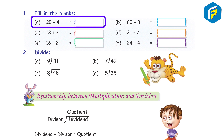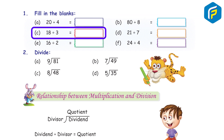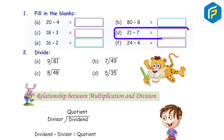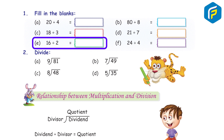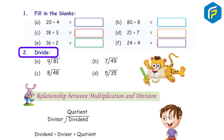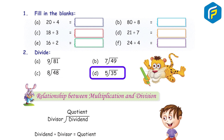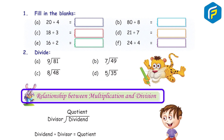Exercise 7.1, Question 1: Fill in the blanks. a) 20 ÷ 4 = 5. b) 80 ÷ 8 = 10. c) 18 ÷ 3 = 6. d) 21 ÷ 7 = 3. e) 16 ÷ 2 = 8. f) 24 ÷ 4 = 6. Question 2: Divide. a) 81 ÷ 9 = 9. b) 49 ÷ 7 = 7. c) 48 ÷ 8 = 6. d) 35 ÷ 5 = 7.